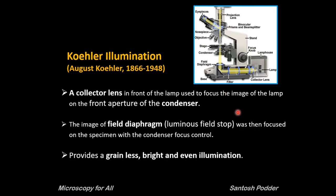The illumination technique we discussed today was first described by August Köhler from Carl Zeiss Corporation in the late 19th century as a method of providing optimum specimen illumination, and it is still widely employed for modern microscopes even over 100 years later. In Köhler illumination briefly: a collector lens in front of the lamp focuses the image of the lamp on the front aperture of the condenser, and the image of the field diaphragm is focused on the specimen with the condenser focus control. This technique is now adopted by all manufacturers of modern laboratory microscopes because it provides grainless, bright, and even illumination, allowing the user to realize the microscope's full potential.